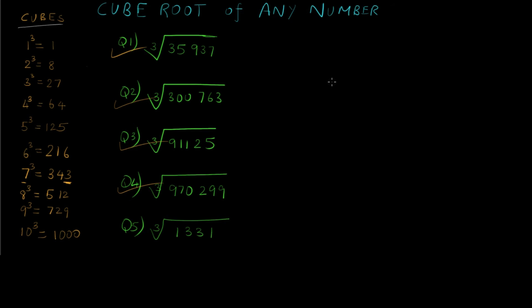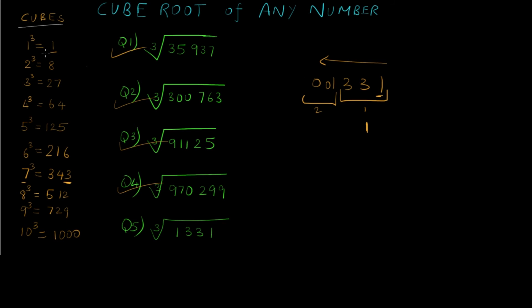Now let's solve the last question, which is pretty simple: find the cube root of 1331. Making groups of 3 from right to left, the first group is 331 and the second group is 001. For the first group, the units place is 1, and 1 cubed is 1, so the first digit is 1. For the second group, 001 — the cube closest to and less than or equal to 1 is 1, which is 1 cubed. So the second digit is also 1, giving the final answer 11. Indeed, 11 cubed equals 1331.